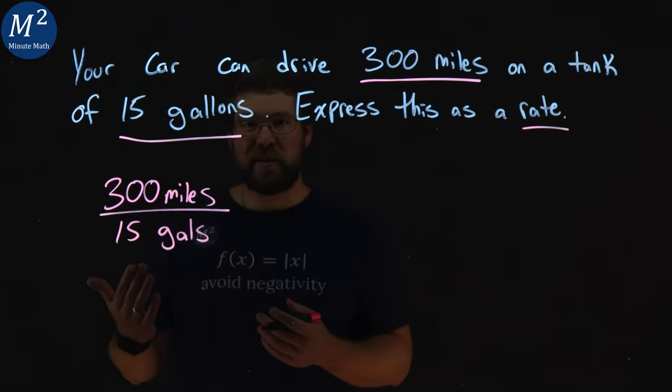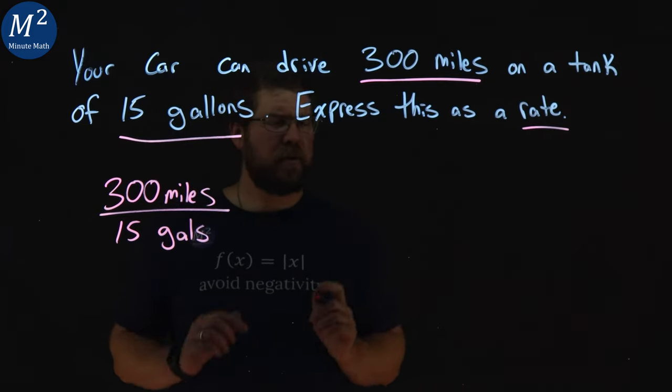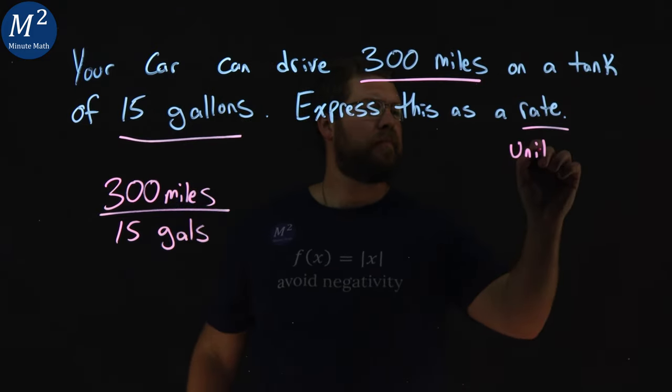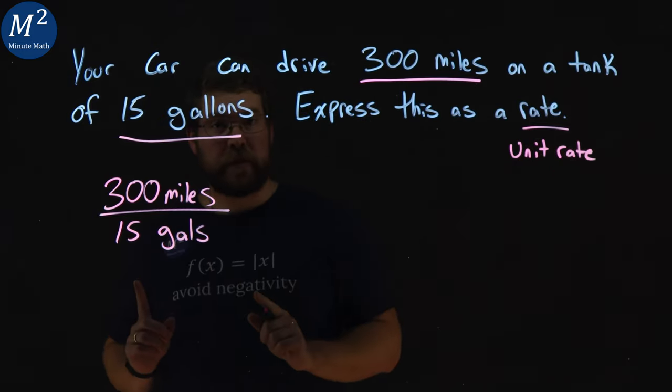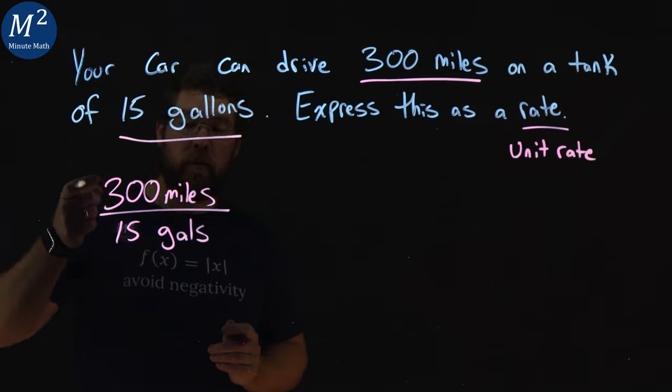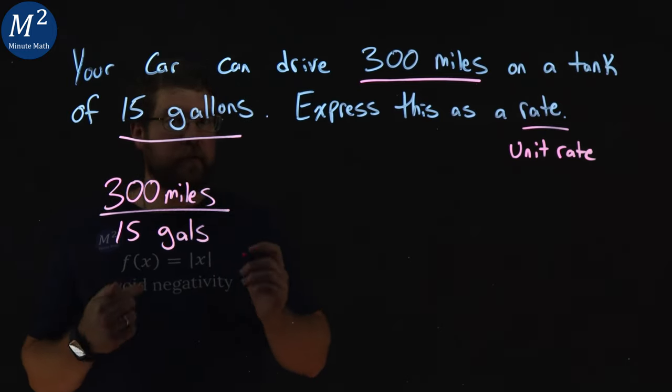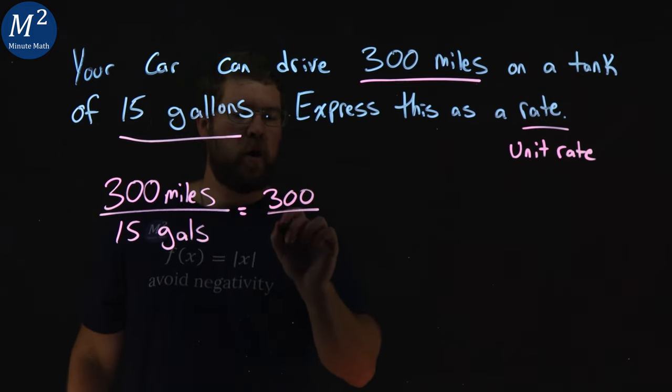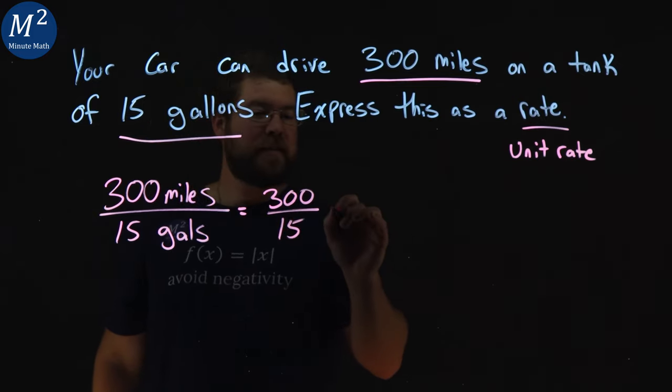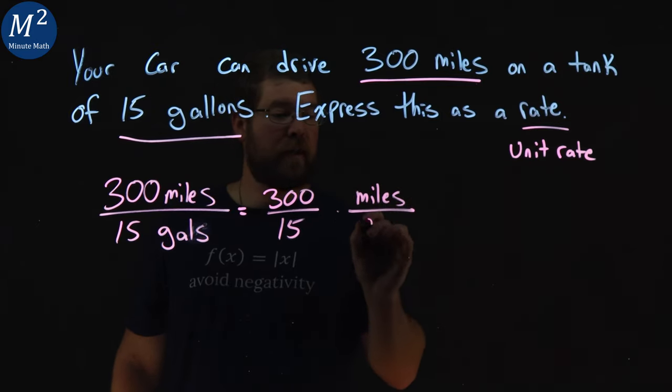Here, we've set a proportion, but what we want to find is called a unit rate. Unit rate per one unit. Here, we're saying we can drive 300 miles per 15 gallons. If we want to simplify this as a fraction, we have 300 over 15 times miles over gallons.